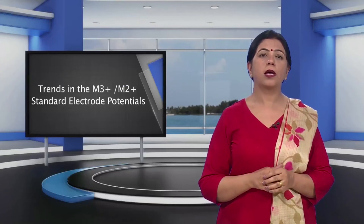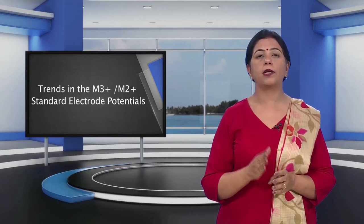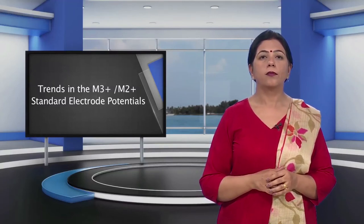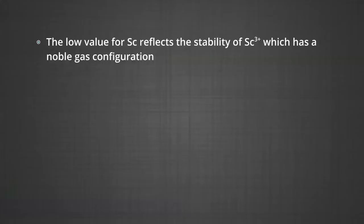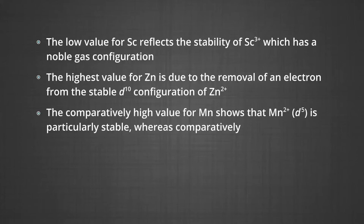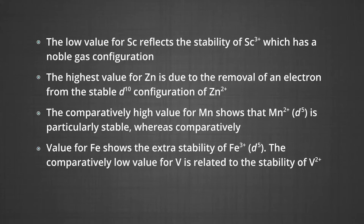Let us study the trends in conversion from metal ion in 3+ state to metal ion in 2+ state — the standard electrode potentials. An examination of the E° values shows varying trends. The low value for scandium reflects the stability of Sc3+ with its noble gas configuration. The highest value for zinc is due to removal of an electron from the stable D10 configuration of Zn2+. The comparatively high value for manganese shows that Mn2+ with D5 configuration is particularly stable, while the low value for iron shows the extra stability of Fe3+ with D5 configuration. The low value for vanadium is related to the stability of V2+ ion.